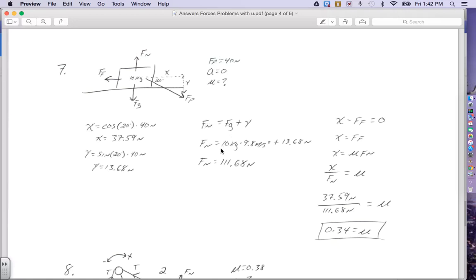Force of gravity is the mass, 10 kilograms times G, 9.8 meters per second squared, and we just solve for the Y, which was 13.68 Newtons. Plugging that into my calculator, I get 111.68 Newtons for the normal force.